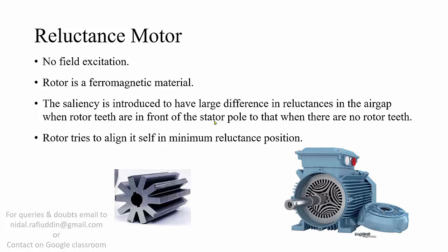The saliency in the rotor is introduced in order to have a large difference in reluctances in the air gap: when the rotor teeth are in front of the stator pole versus when the rotor is oriented such that there are no rotor teeth in front of the stator pole. That is, the rotor tries to align itself in the minimum reluctance position. Shown here are the two types of rotor of the reluctance motor. The rotor design in figure 2 allows minimum reluctance, meaning it allows magnetic flux lines to pass through most easily.